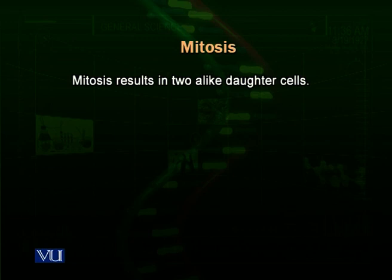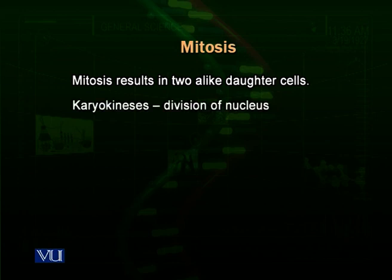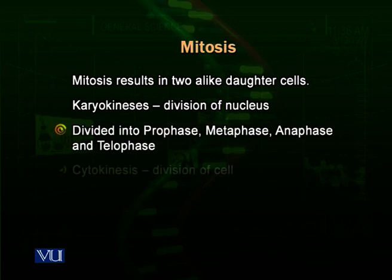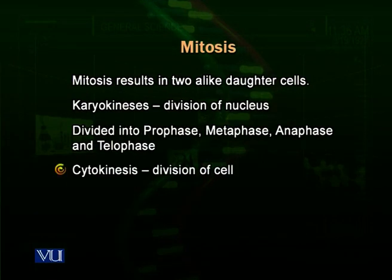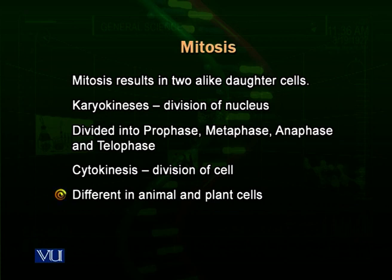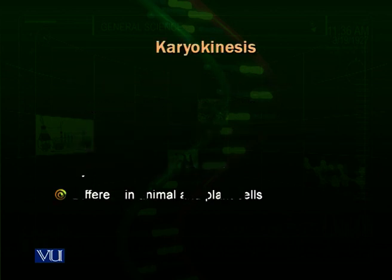Mitosis results in two cells which are alike by almost every aspect. Mitosis is also called karyokinesis — 'karyo' is the word used for the nucleus, so this refers to division of the nucleus. When karyokinesis completes, then comes the next phase called cytokinesis, when the cell itself is divided into two. Karyokinesis consists of four phases: prophase, metaphase, anaphase, and telophase. When these four phases complete, the nucleus is completely divided and then the cell divides itself into two daughter cells. Cytokinesis is different in animal and plant cells, which we will talk about later.